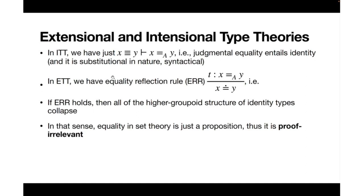Now there is this idea of homotopic equivalence. If this equality reflection rule holds, then all of the higher groupoid structure of the identity type collapses. In set theory, equality is a proposition and it is proof-irrelevant. In homotopy type theory, the identity type can have non-trivial constructors besides reflexivity, but in extensional type theory all non-trivial terms of the identity type collapse to reflexivity.